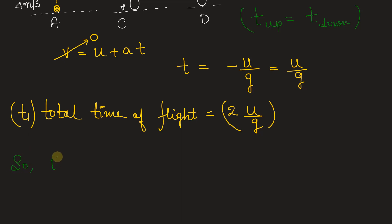The time of flight is T_i. And that will be equal to 2 times u_i by g.